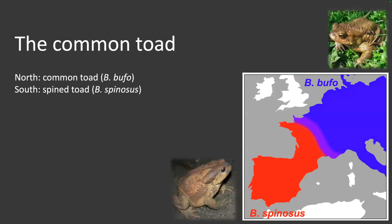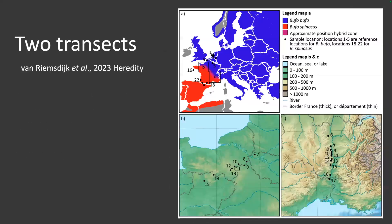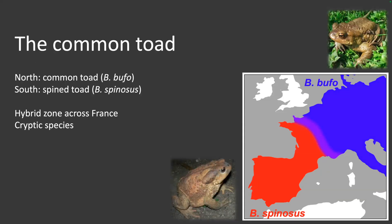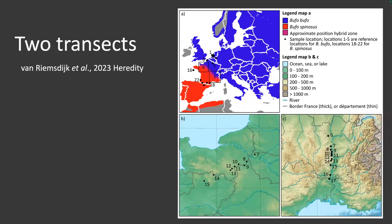My last PhD project was on the common toads, which have a really cool hybrid zone straight across a front — it's really long and very nice. There are two species you cannot really tell apart; the only person in the world who can tell them apart is my PhD supervisor, and even what he uses morphologically doesn't work everywhere. But they have about 2 million years of divergence between them, so they are quite genetically different. We took two transects across the hybrid zone, far apart from each other.